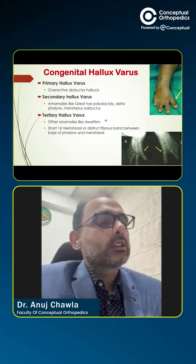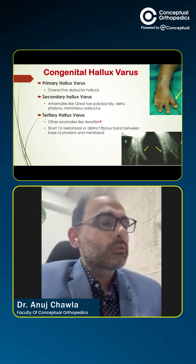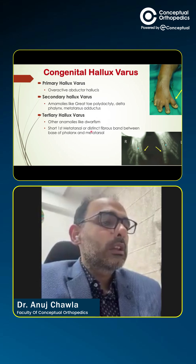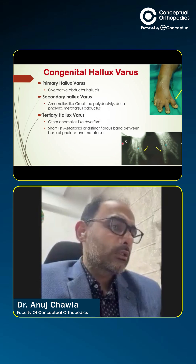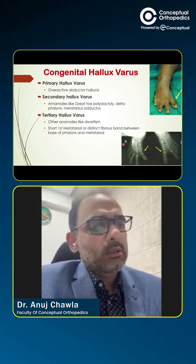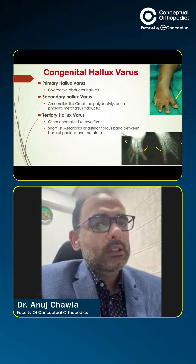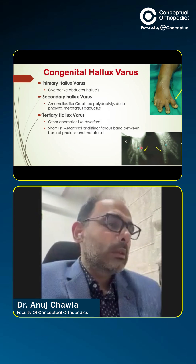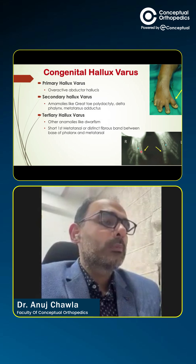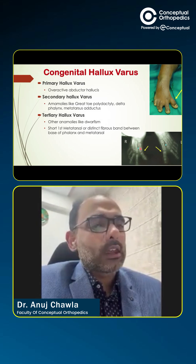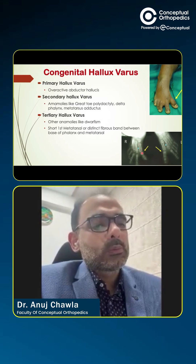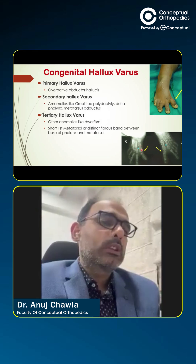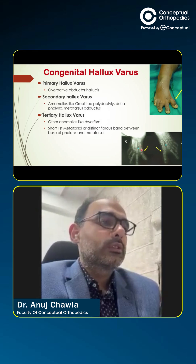And then there is another thing called a tertiary hallux varus, which is associated with other anomalies like dwarfism. Most of the time it may be associated with either a short first metatarsal or a brachymetatarsia, or there would be a fibrous band between the base of the phalanx and the metatarsal — some band right across over here, which has to be released when you're doing this kind of surgery.